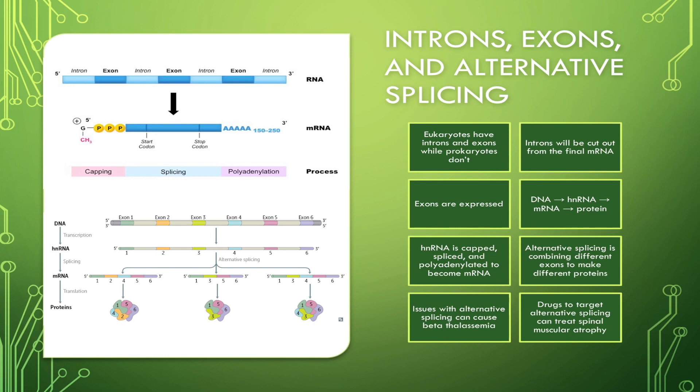So alternative splicing can make a variety of protein products from a single DNA sequence. As you can imagine, this is really efficient, so you don't need a lot more DNA. You can just turn one piece of DNA into many proteins.